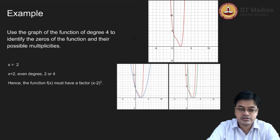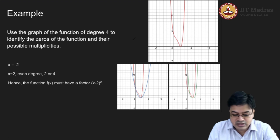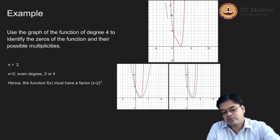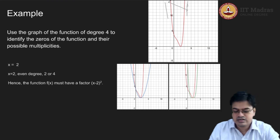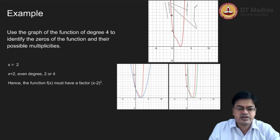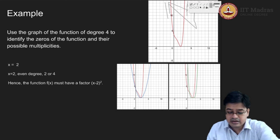Now we have understood how multiplicities affect the polynomial and how we are able to find the multiplicities of polynomial functions with some factors. Still, we do not have an answer to the question of what is deciding this behavior — why this function will go to infinity, how this behavior is decided. Let us try to understand that through what is called end behavior of the polynomials.